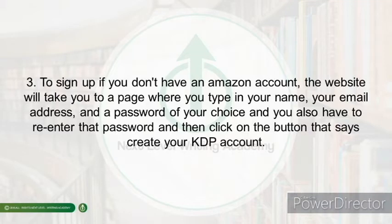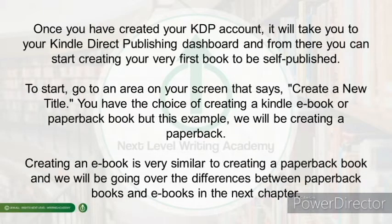To sign up, if you don't have an Amazon account, the website will take you to a page where you type in your name, your email address, and a password of your choice. You also have to re-enter that password, then click the button that says "Create your KDP account." Once created, it will take you to your Kindle Direct Publishing dashboard, where you will start creating your very first book to be self-published on Amazon.com.